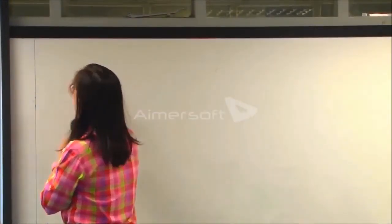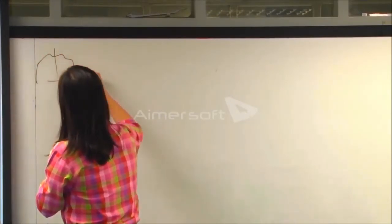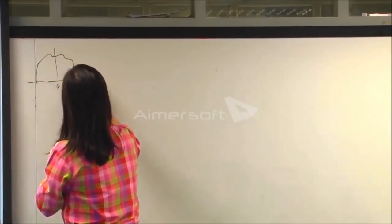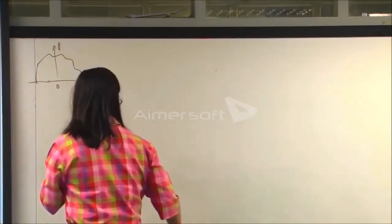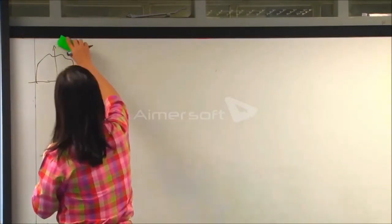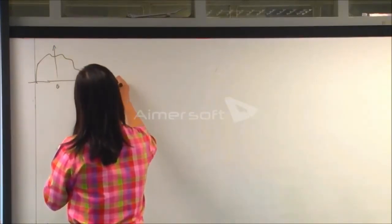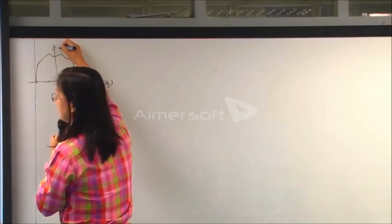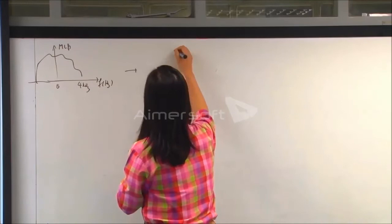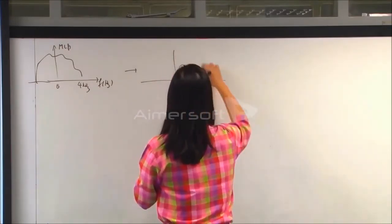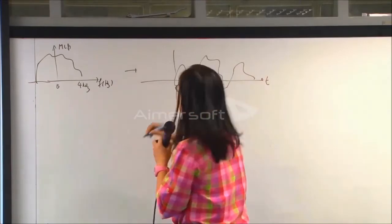If you remember, the voice spectrum is about 4 kHz. Suppose this is our voice spectrum — in the time domain it may look like this. This is our voice now.